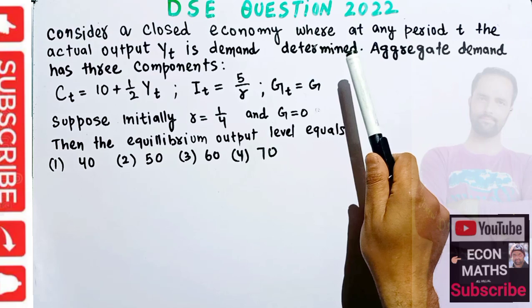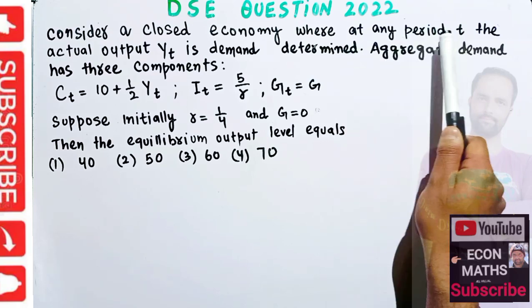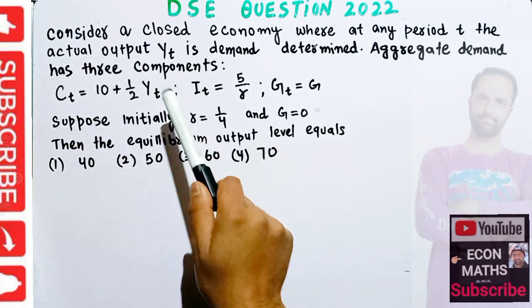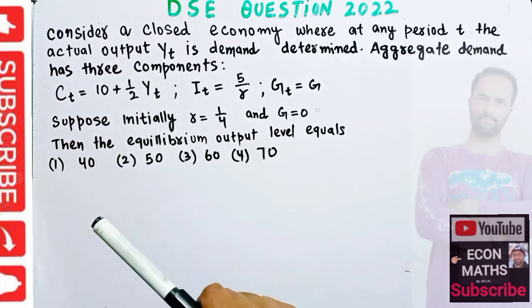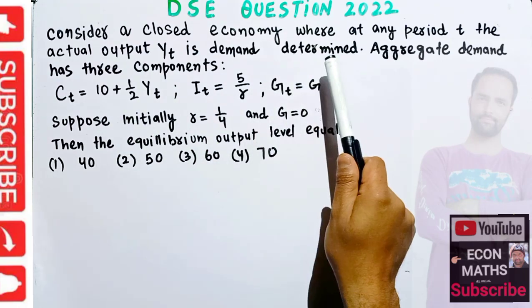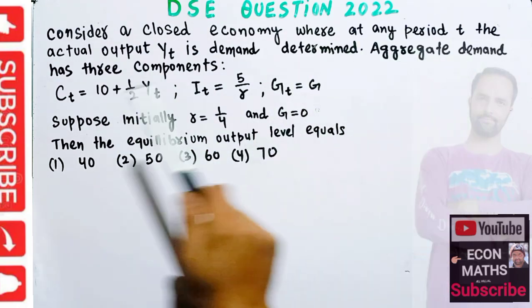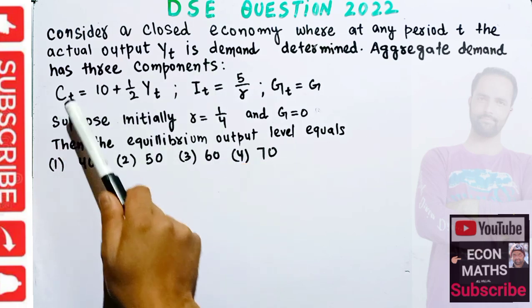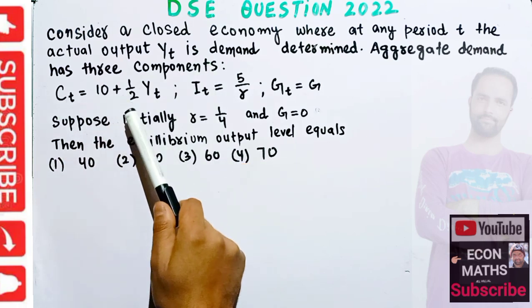The question is: Consider a closed economy where at any period t the actual output Yt is demand determined. Aggregate demand has three components: consumption C = 10 + (1/2)Yt, investment I = 5/r, and government expenditure G is autonomous.